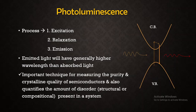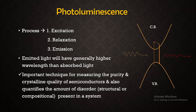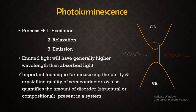The application of photoluminescence is that it is an important technique to measure the purity of a sample and also the crystalline quality of semiconductors. By studying this, we can also quantify the amount of disorder present in the semiconductor system. The disorder may be structural — how the structure has changed, or what impurities or defects are present in the crystal — or even compositional disorder, such as whether a semiconductor prepared with certain chemicals is properly ordered after composition. This is the main significance of photoluminescence in semiconductors.